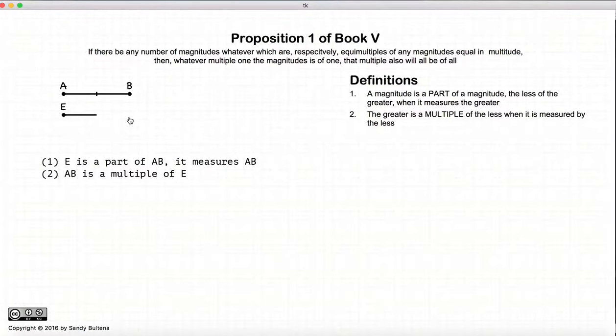Also, in this situation, AB is a multiple of E. Again, because E fits into AB a certain number of times, an integer number of times. So AB is a multiple of E.